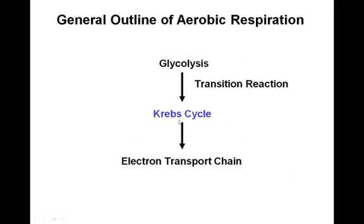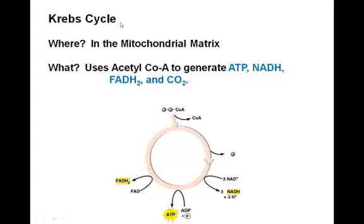Where does the Krebs cycle occur? Glycolysis occurred out in the cytosol, but the Krebs cycle is occurring inside the mitochondrial matrix. What happens is that the two-carbon acetyl-CoA molecule interacts in a series of intermediates to generate ATP and to generate electron carrier molecules — NADH and FADH2 — as well as generating CO2, which is a byproduct of aerobic respiration.